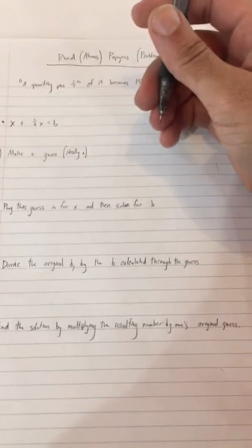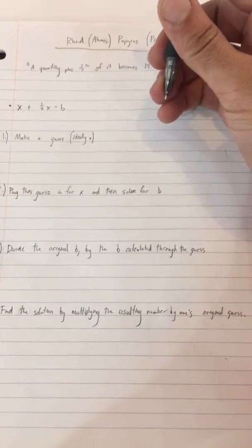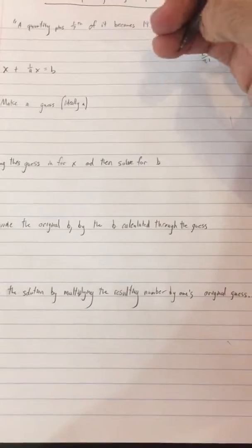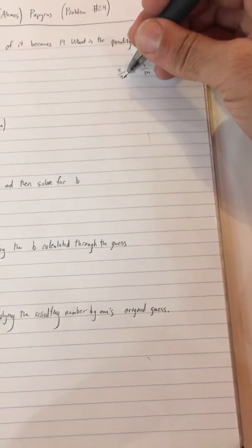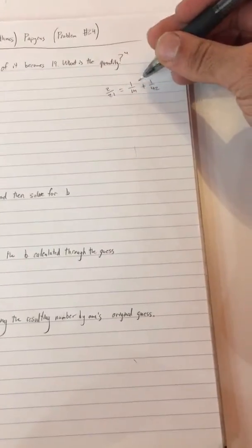Now before we move on to how to actually solve this, one important thing to note about Egyptian math is that they would express quantities in unit fractions as opposed to just natural fractions. And so instead of 2 over 21, they would express it as 1/14th plus 1 over 42, just for instance.